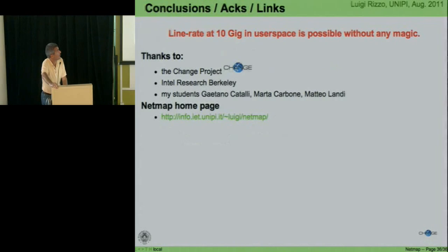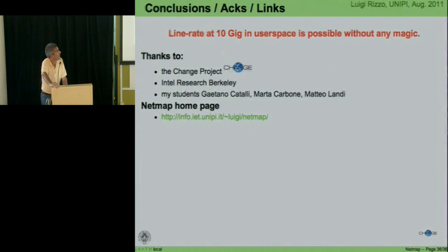In conclusion: we can do 10 Gbps at line rate from user space without any magic. We thank the Change Project for funding, Intel Research Berkeley, and my students Gaetano Catalli, Marta Carbone, and Matteo Landi who helped with parts of this work.